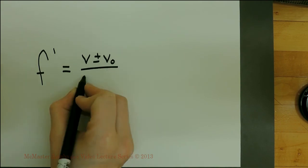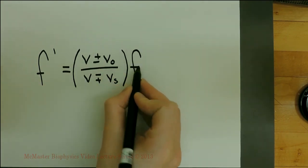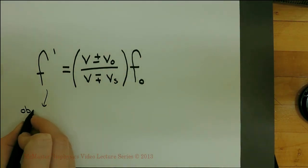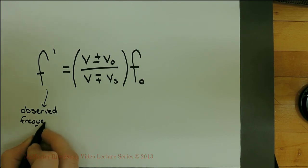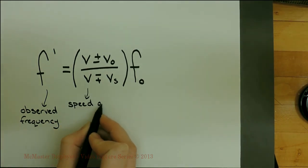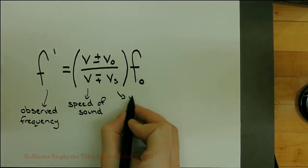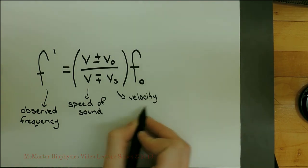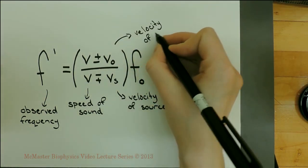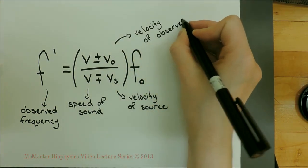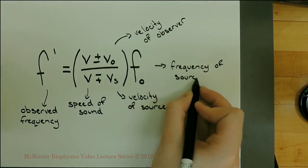Calculations of the Doppler effect can use this equation, where F prime is the observed frequency, V is the speed of sound, Vs is the velocity of the source, V0 is the velocity of the observer, and F0 is the frequency of the source.